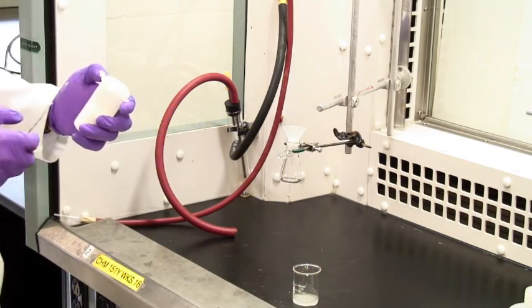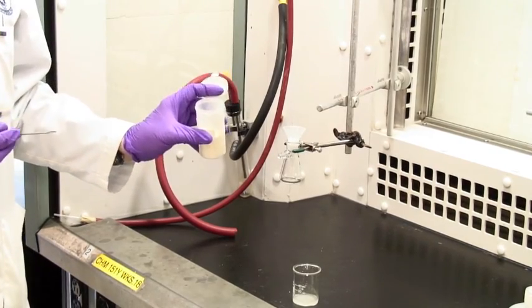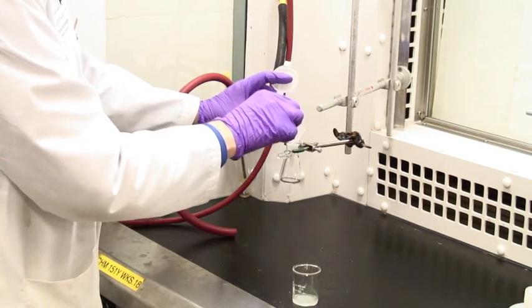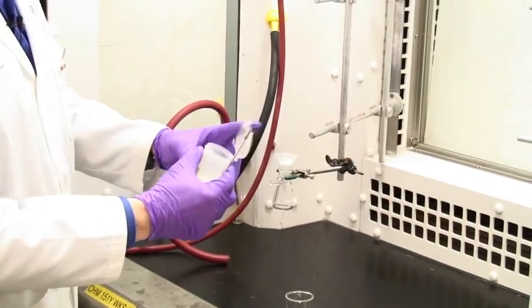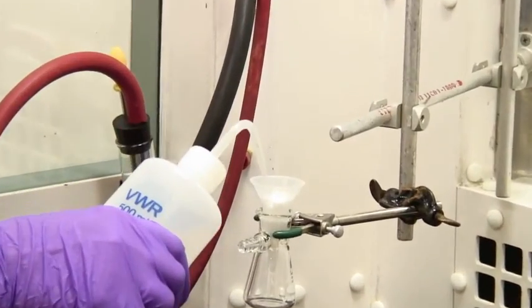This particular kind is called Celite. There are many others. It's a fine powdered solid. It looks like fine sand or flour. You take an amount of it, about like that, pop it on your filter and add some solvent to get it wet.